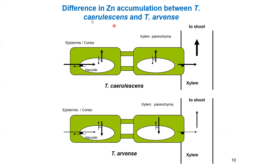Comparing zinc accumulation between two species: in Thlaspi arvense, epidermal cells accumulate zinc in vacuoles, there is very low transport to the xylem, and thus low translocation toward the shoot. In contrast, another species shows high uptake, low vacuolar concentration in the root, and high translocation toward the xylem — meaning more metal reaches the shoot. The second species is more suitable for phytoremediation because it transports more metals to the shoot.